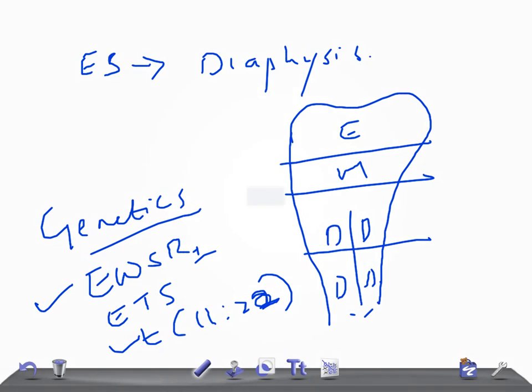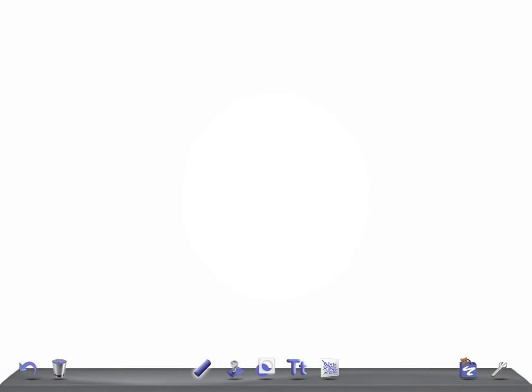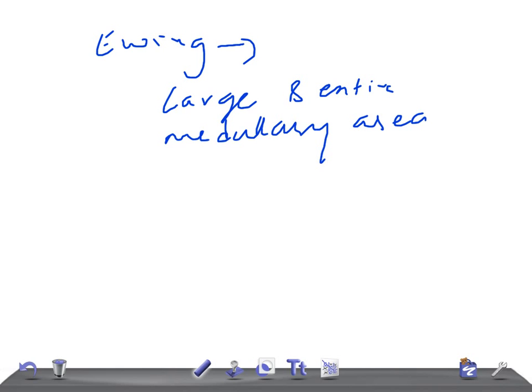Let's talk about the gross pathology. If you look at Ewing's sarcoma, the tumor typically involves a large area—even the entire medullary cavity can be affected. The color is gray-white, and if you touch it, it's soft and sometimes thin.